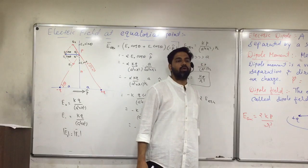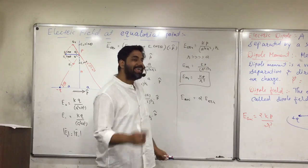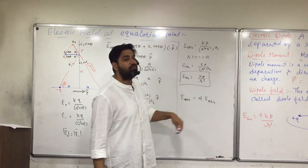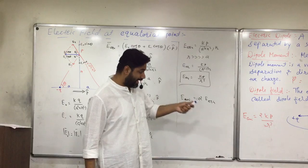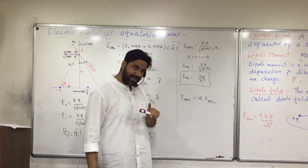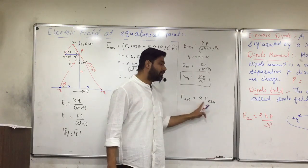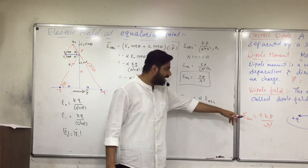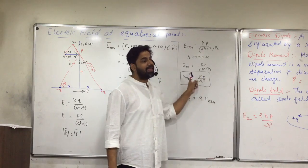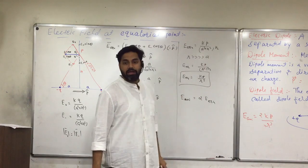Comparing the magnitudes, E axial is double of E equatorial. This is clearly visible from the formulas: E axial is 2kp upon r cube, while E equatorial is kp upon r cube.